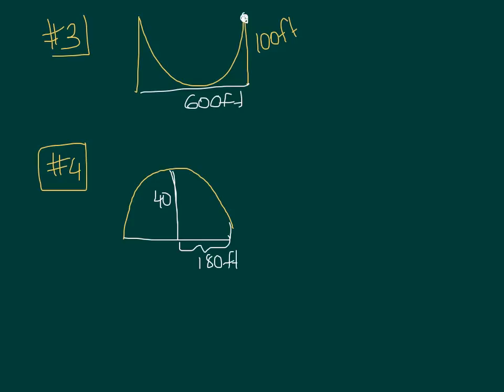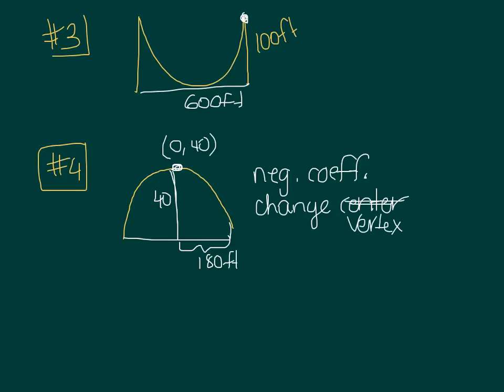In number 4 we've got an upside down parabola, so remember this is going to have a negative coefficient. You're also going to change the vertex. A good idea for a vertex might be (0, 40) up here. Number 5 shouldn't be too bad, number 6 not that bad. They give you p in that, and then 7 and 8 are actually both circles. So give it your best shot, we'll look at any issues tomorrow in class. Feel free to send me any emails or Schoology messages.